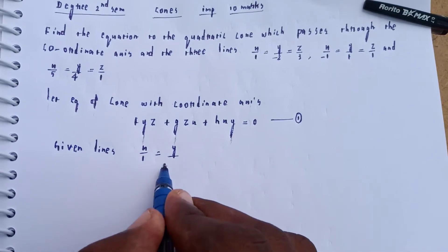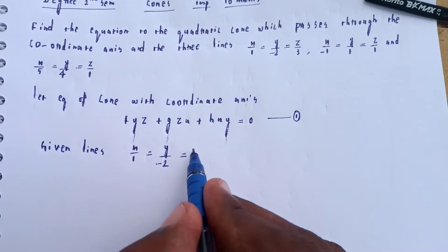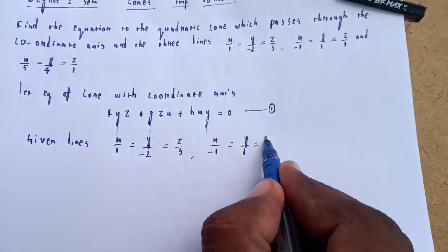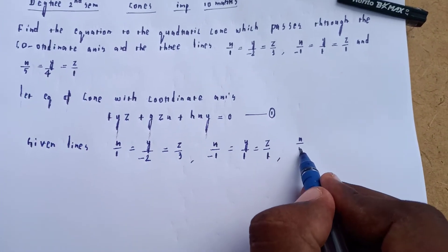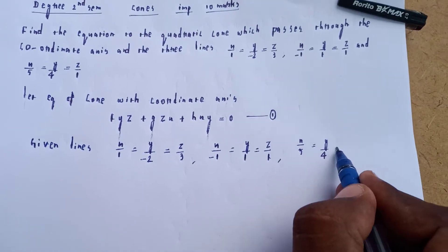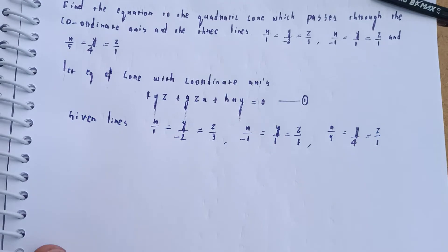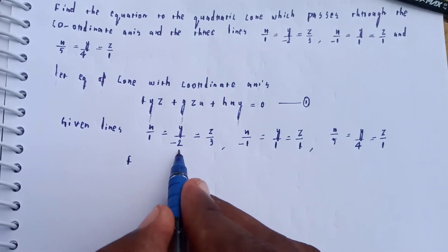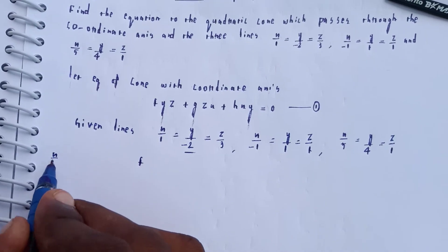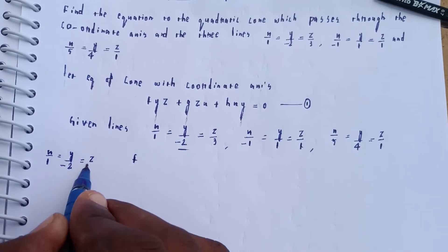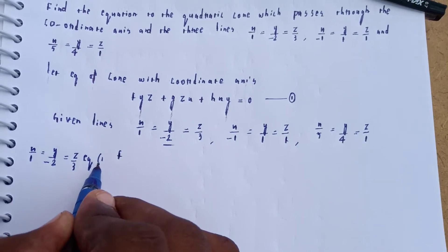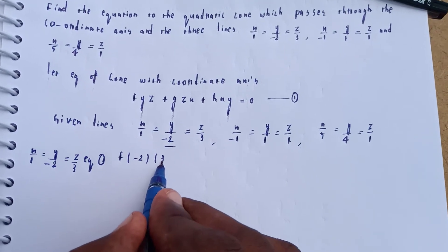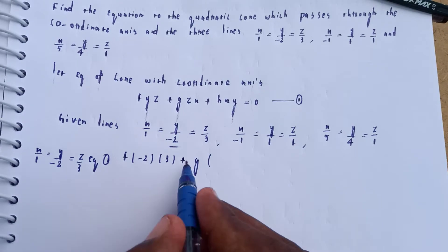The three given lines are: x/1 = y/(-2) = z/3, x/(-1) = y/1 = z/1, and x/5 = y/4 = z/1. Each of these lines passes through the cone and must satisfy equation number 1.